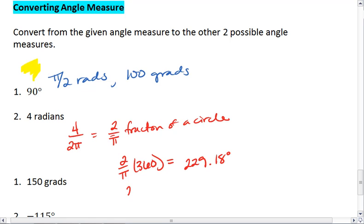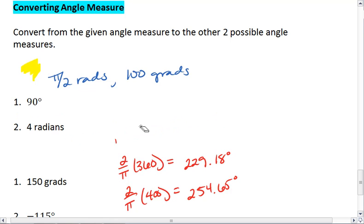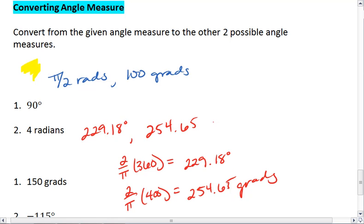If I want to know grads, I take 2 over π times 400. That gives me 800 over π, or the decimal equivalent, which is 254.65 grads. Thus, 4 radians is 229.18 degrees, or 254.65 grads.